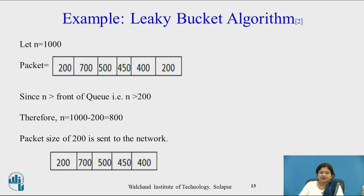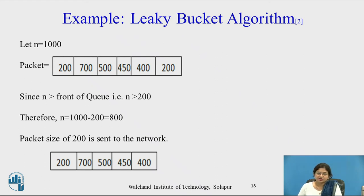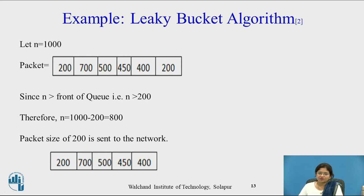Let me explain this with an example. Let N be set to 1000. There are 6 packets with sizes 200, 700, 500, 450, 400, and 200 bytes. Since N (1000) is greater than the front of the queue (200), we send the 200-byte packet and decrement: N = 1000 − 200 = 800. The 200-byte packet is sent to the network, leaving 5 packets. Next, the front of the queue is 400 and N is 800, so N = 800 − 400 = 400. The 400-byte packet is sent, leaving 4 packets.